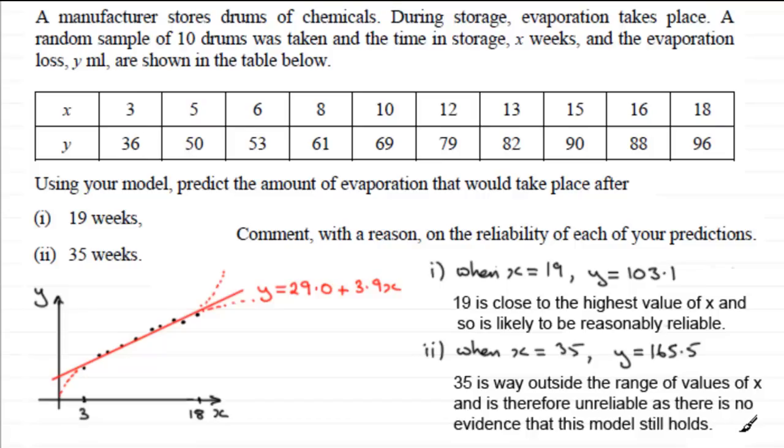So when doing these predictions then make sure that when you make a prediction it's only going to be reliable if your value of x that you take is within the range here between your lowest value and your highest value. If it's outside that range then generally it's going to be unreliable. Okay?